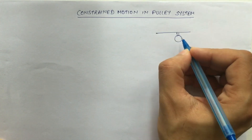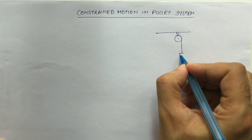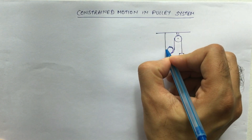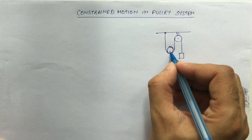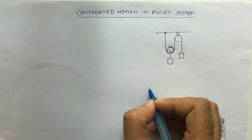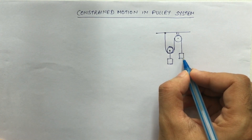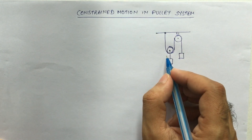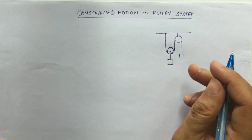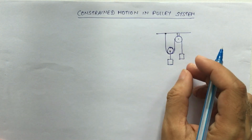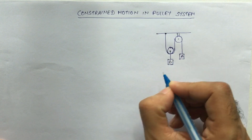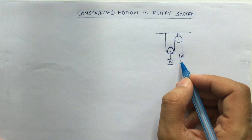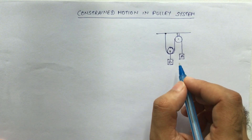There is a pulley system: this is a fixed pulley, there is a block hanging here, and there is one moving pulley fixed to another box hanging here. When you pull block A in the downward direction, this pulley will move in the upward direction. This is the example of constrained motion. When you try to solve using FBD, you will not get the relation between the accelerations of block A and block B because both are moving with different speeds, meaning different accelerations.